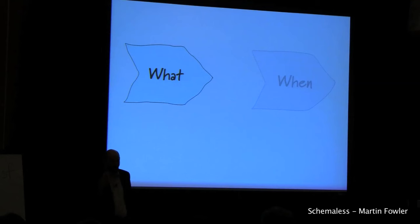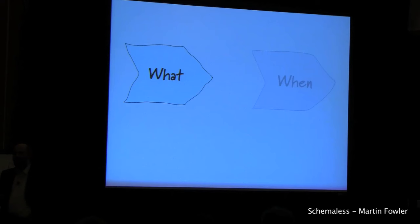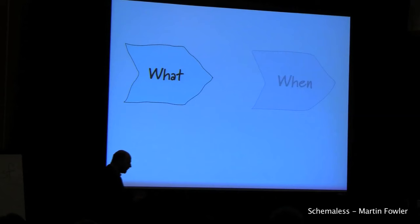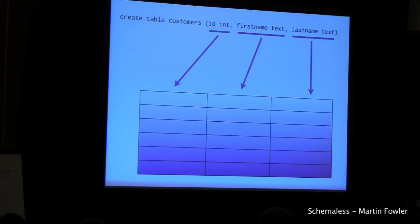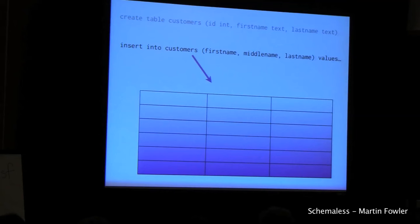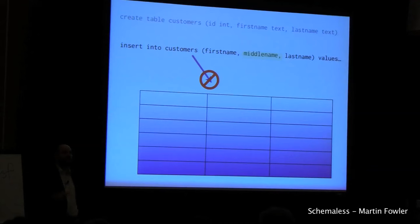I'm going to begin by focusing on the 'what' side — what do we mean by not having a schema, and the various ways in which it crops up. When we talk about schemalessness in the context of NoSQL databases, it's generally used in comparison with relational databases. In a relational database, you set up the structure of a table as you create it, you define the various columns that are allowed, and if you try to insert something that doesn't fit, you're going to get an error — you're prevented from carrying out that insertion.